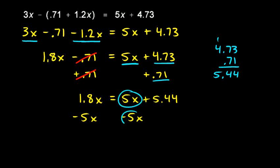Now on the right, the 5x and the minus 5x add up to 0, so those guys cancel each other out. That leaves me on the right side with 5.44. On the left, I have 1.8x minus 5x. So I just have to do 1.8 minus 5, and 1.8 minus 5 comes out to negative 3.2. So 1.8x minus 5x is negative 3.2x. So I have negative 3.2x equals 5.44.